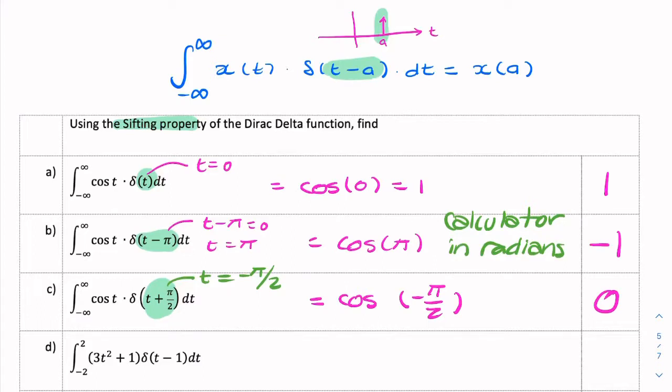Next example, again we're looking at the impulse function. You want t equals 1, so we're looking at x of 1. Now x is the function 3t² plus 1, that's your x of t. So the answer will be 3 times 1² plus 1, which is 4.